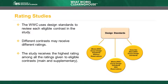When using WWC design standards to review a study, the WWC gives each eligible finding in the study a rating and assigns a rating for the full study. Different contrasts within the same study may receive different ratings, such as when a full sample finding meets WWC group design standards without reservations, but a subgroup finding in the same study has high attrition and meets WWC group design standards with reservations.